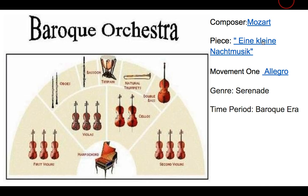We're going to listen to Eine Kleine Nachtmusik, movement one which is the Allegro. The Allegro movement is named after the tempo or speed of the piece. The genre is a serenade. The time period is baroque.